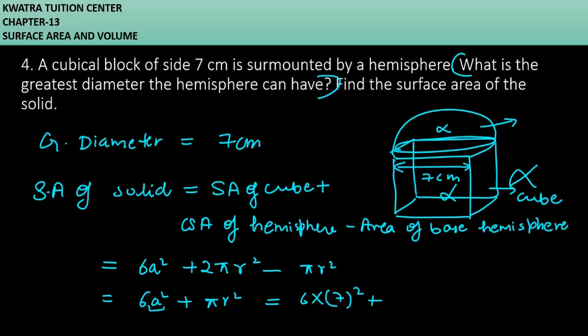Now you can put the values in it. 6 into side square - how much is side? 7 square. Plus πr², which is 22 over 7. How much is r? It is 7 by 2, because the diameter was 7 centimeter.